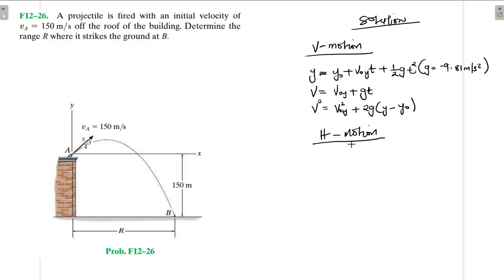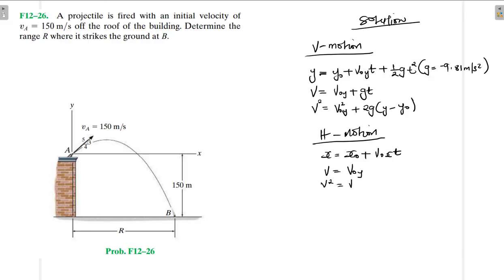For horizontal motion, the horizontal velocity is considered constant because acceleration equals zero. So x_final equals x_0 plus v_0x times t, with the acceleration part equal to zero. The final velocity in the horizontal direction equals the initial velocity, and since acceleration is zero in the horizontal direction, v_final squared follows accordingly.